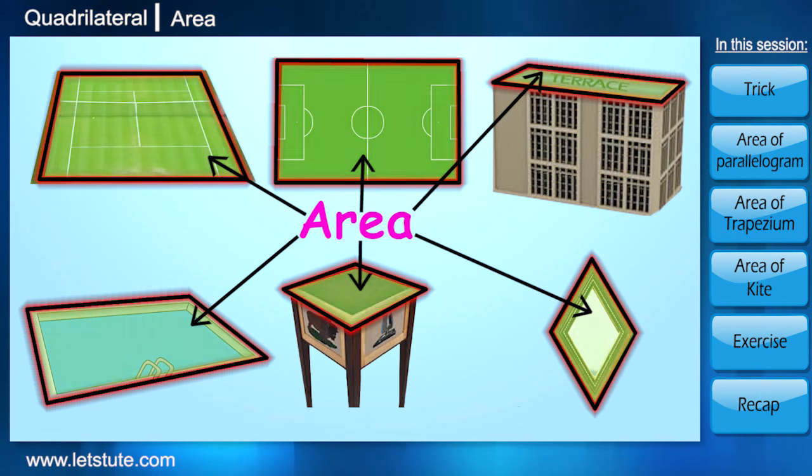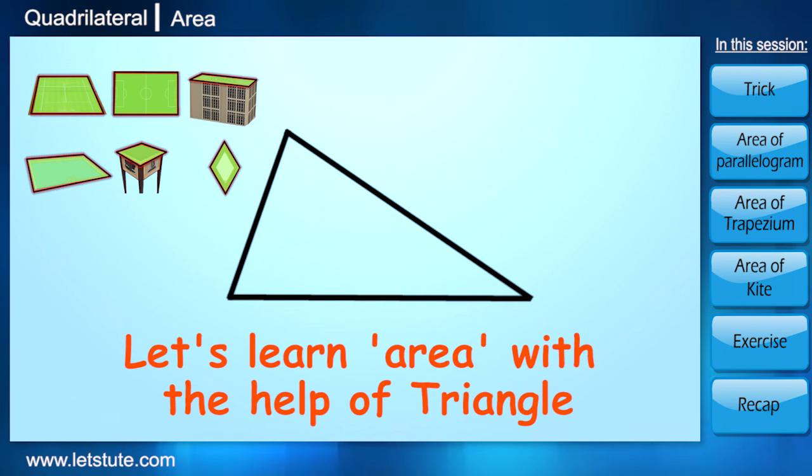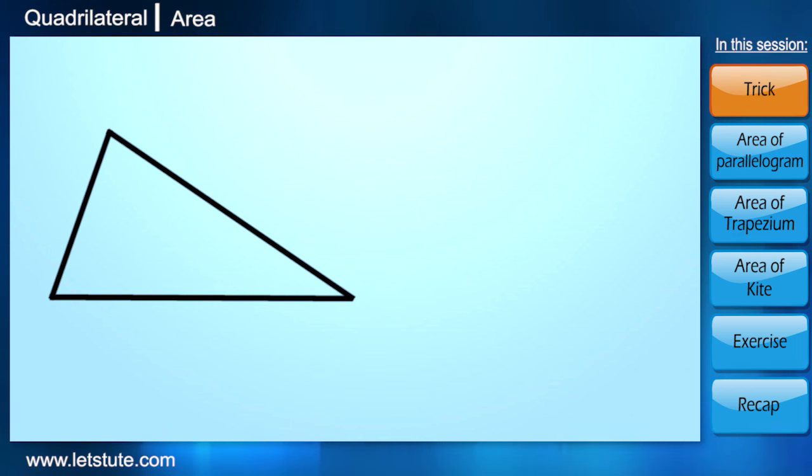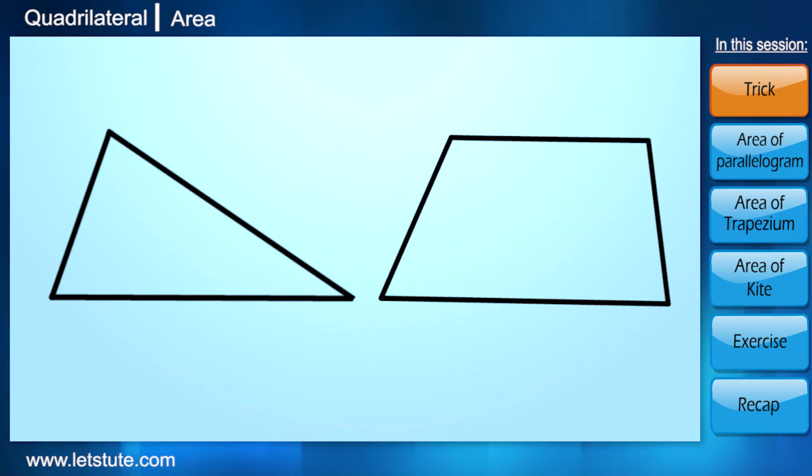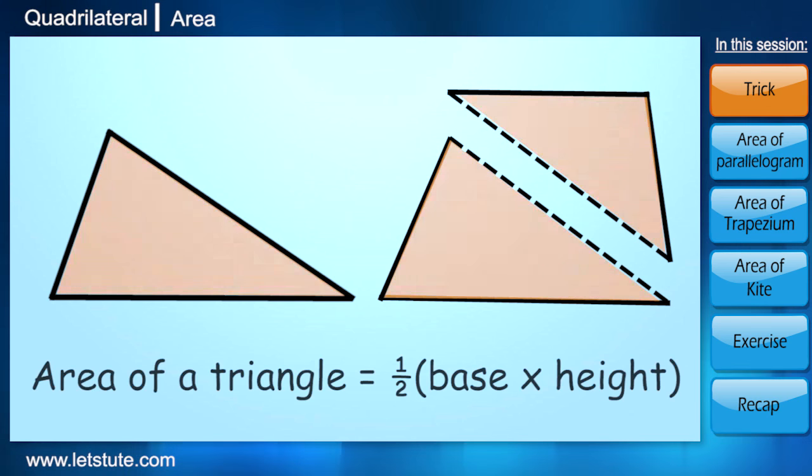We'll try to simplify it by using triangles. Let's proceed. We know that any quadrilateral diagonally can be divided into two triangles, right? And the area of a triangle is half times base into height.